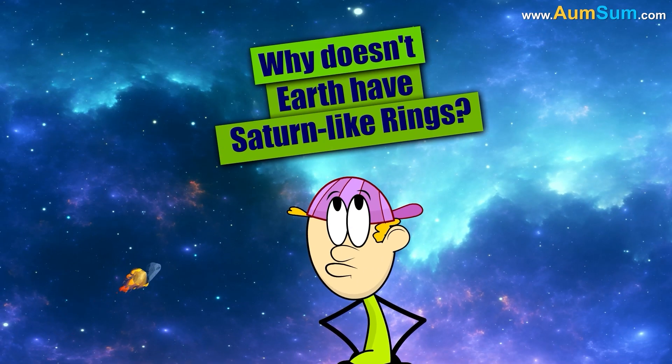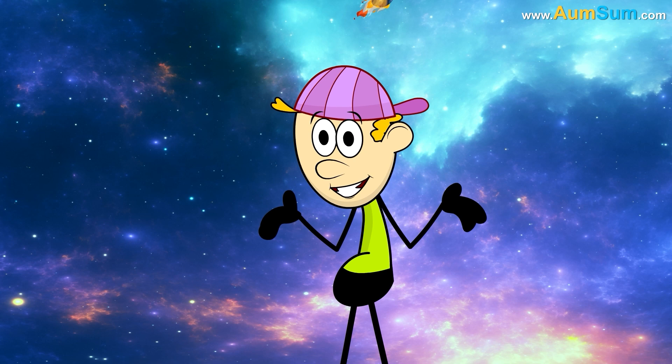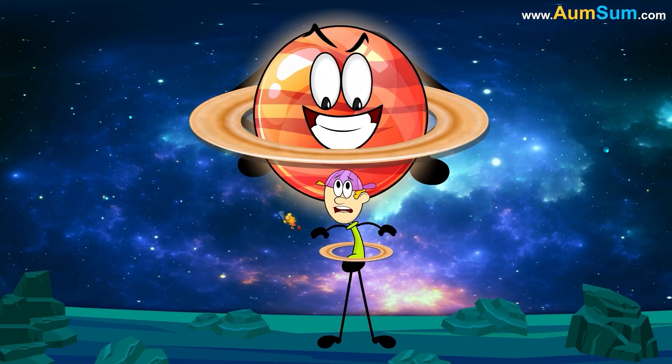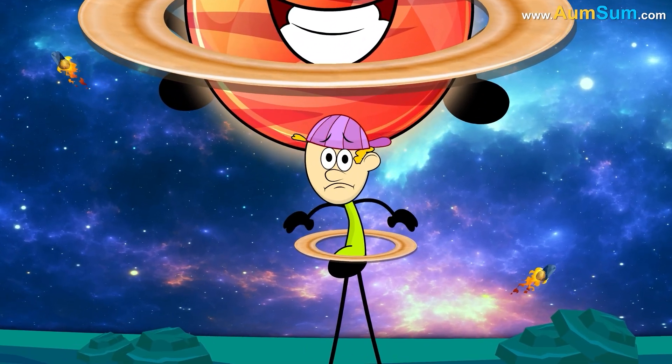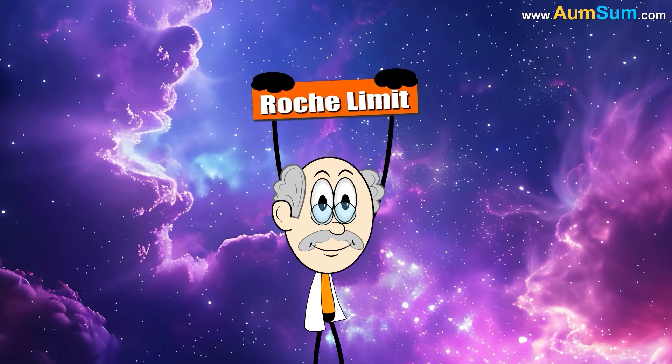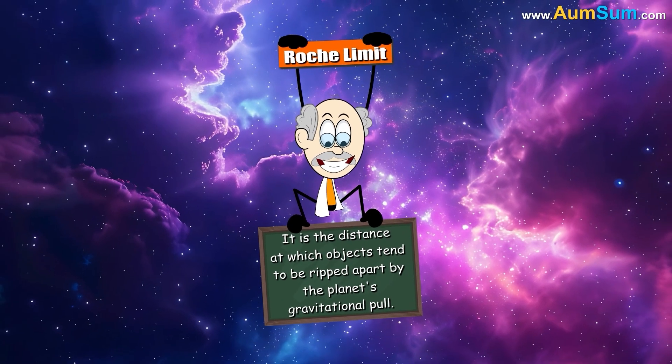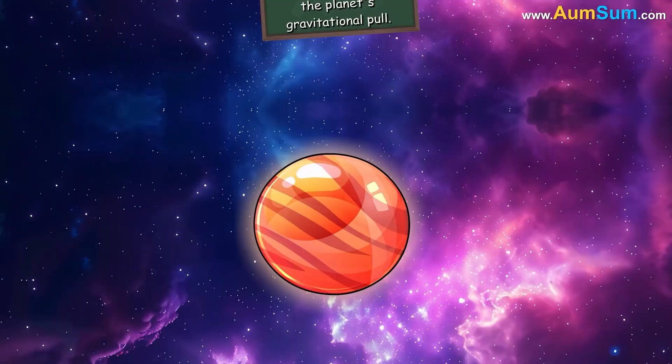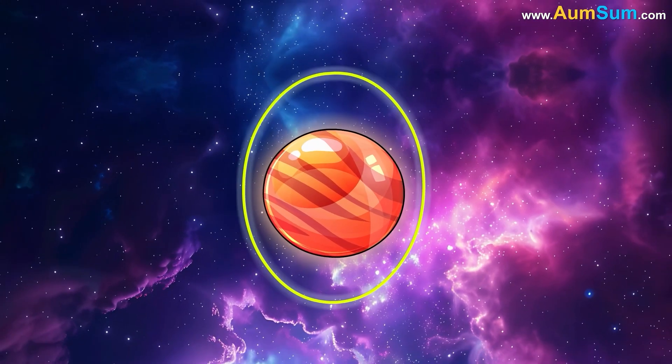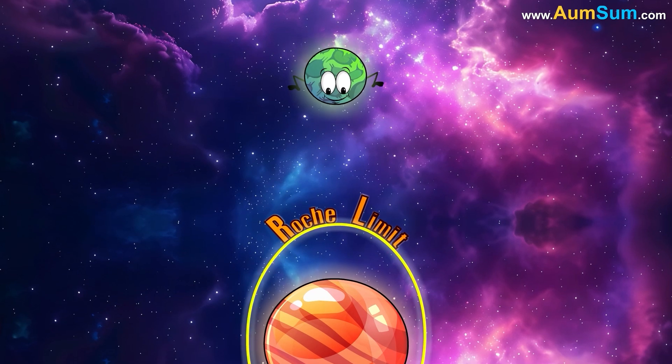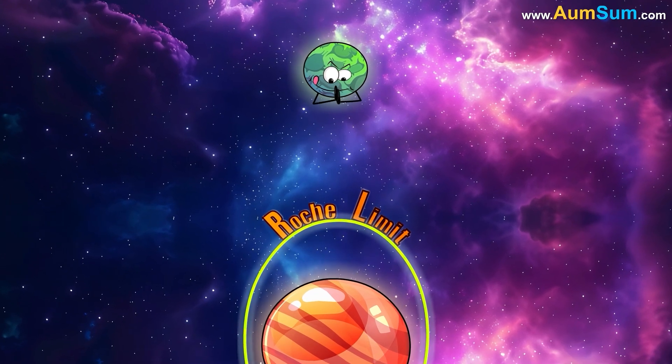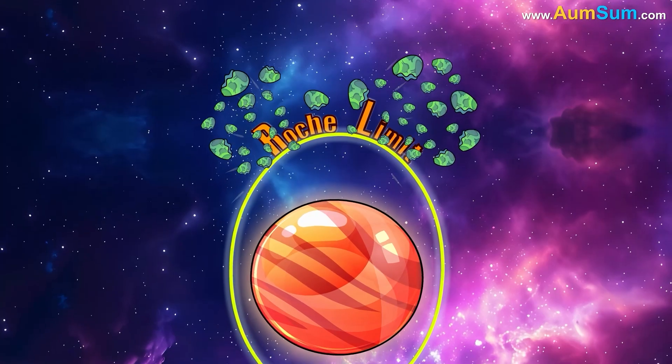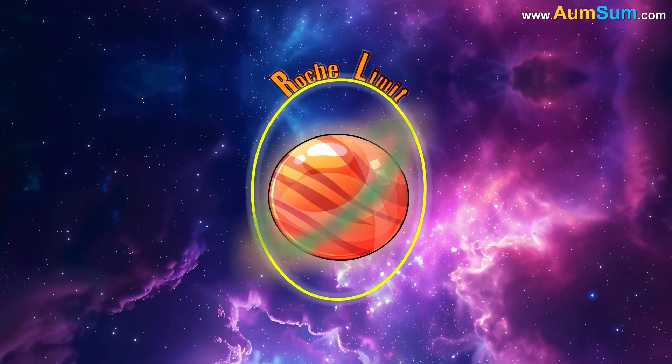Why doesn't Earth have Saturn-like rings? It's got to do with Roche limit. It is the distance at which objects tend to be ripped apart by the planet's gravitational pull. Now, in case of Saturn, it is popularly believed that a celestial body like moon or comet got too close to it and exceeded the Roche limit. Hence, it got ripped apart into pieces, thus forming its rings.